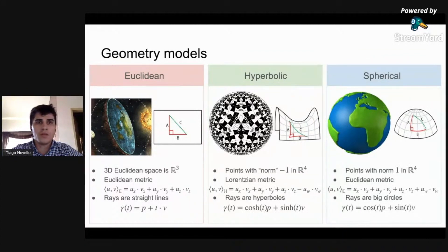On the middle, the hyperbolic space is the set of points in the four-dimensional vector space with Lorentzian norm equals to minus one. Rays in these geometries are hyperbolas and the triangles are thin.